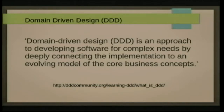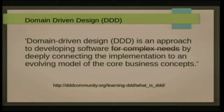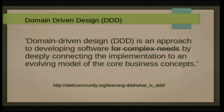I think in a new project you are going to underestimate complexity. Going back to the point about agile methodology, we're going to add stuff over time if there's any longevity in the project. I think the definition is a bit wrong - I think it's for developing any software, not just for complex needs, because the thing is you're not going to know how complex it is later down the track. It also says it's an evolving model of the core business concepts - the business itself will evolve, so your code will have to change and your model will have to change. If we invest a little bit in these types of patterns at the start, it's going to help a whole lot.